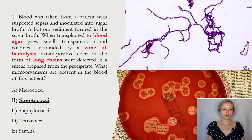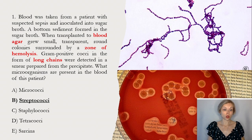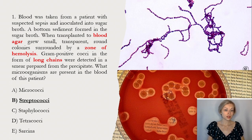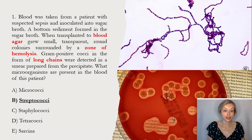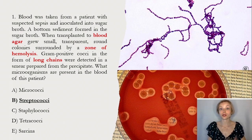Test number one. Blood was taken from a patient with suspected sepsis and inoculated into sugar broth. A bottom sediment formed in the sugar broth. When transplanted to blood agar, small transparent round colonies surrounded by a zone of hemolysis grew. Gram-positive cocci in the form of long chains were detected in a smear prepared from the precipitate. What microorganisms are present in the blood of this patient?